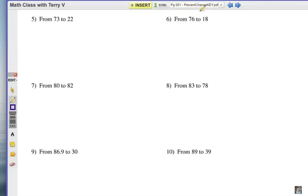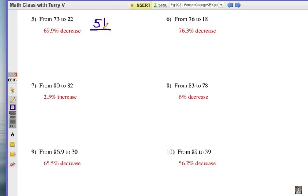That's time to check answers. Here we go. In number 5, you go from 73 to 22. That's a difference of 51, and you're going to divide it by the original number, the first one, which is 73. So when you divide that out and move your decimal point over 69.9 percent, it's a decrease.